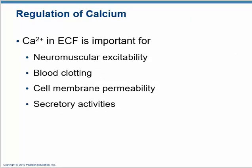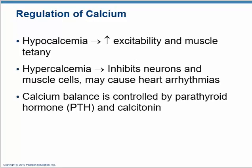Calcium is extremely important and tightly regulated. It is involved in neuromuscular excitability, neurotransmitter release, blood clotting, and more. Hypocalcemia means the outside of excitable cells is less positive relative to the inside, pushing the cell closer to depolarization — causing increased excitability and muscle spasms. Hypercalcemia has the opposite effect: it raises the threshold for depolarization, inhibiting neurons, muscles, and cardiac muscle.